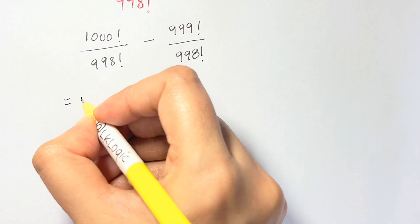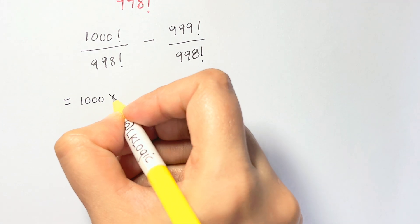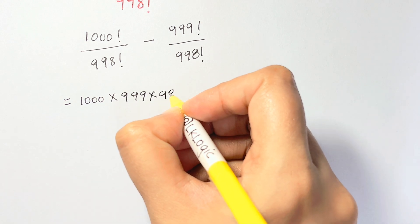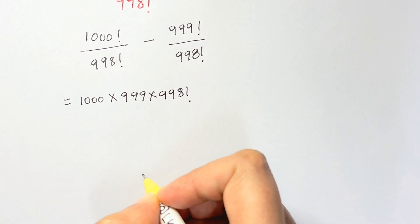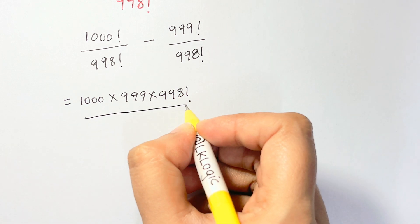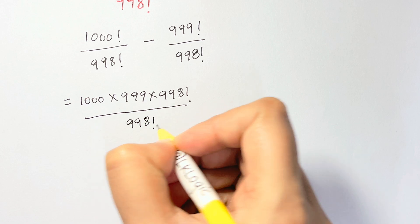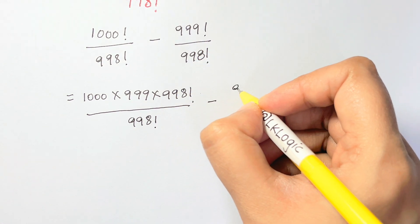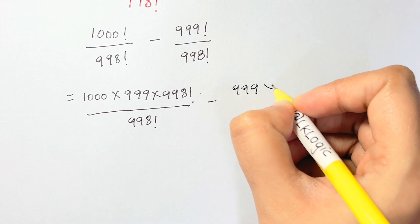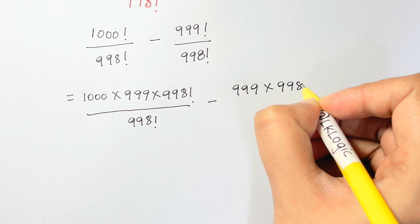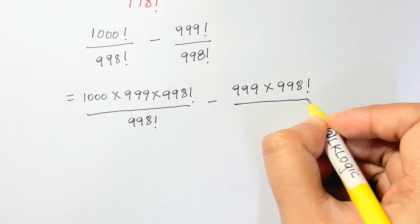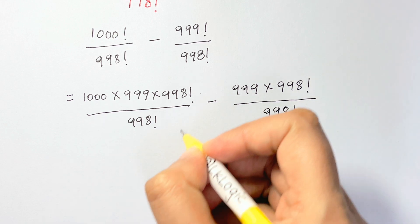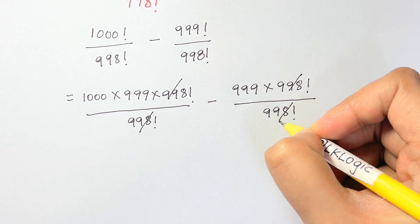Now, 1000 factorial can be written as 1000 times 999 times 998 factorial, and in the denominator we have 998 factorial. Minus: 999 factorial can be written as 999 times 998 factorial divided by 998 factorial.